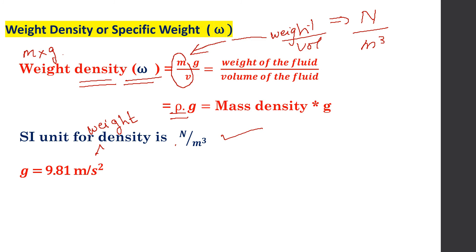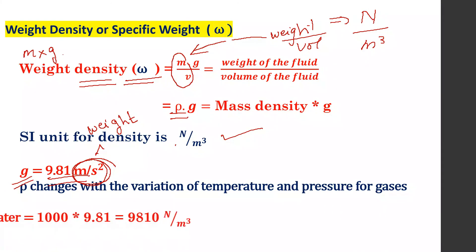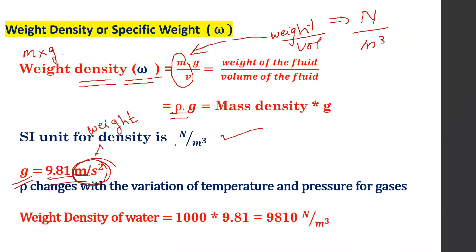The value for acceleration due to gravity is 9.81 meter per second square. The weight density of water is rho multiplied by G. Since rho is 1000 kg/m³ for water, we get 1000 multiplied by 9.81, which equals 9810 Newton per meter cube.